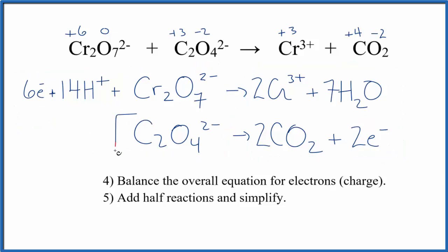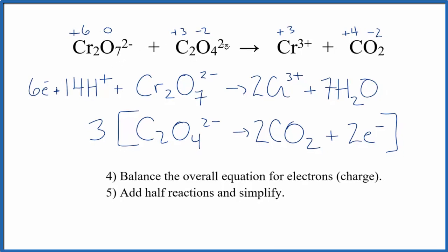If we multiplied this entire side here by three, three times two electrons gives us six electrons, six electrons up here, that would balance the charge. So what we need to do is multiply everything here in the brackets by three, then we'll have our reactants here and our products here. We'll simplify and be done with the redox reaction for Cr₂O₇²⁻ + C₂O₄²⁻.